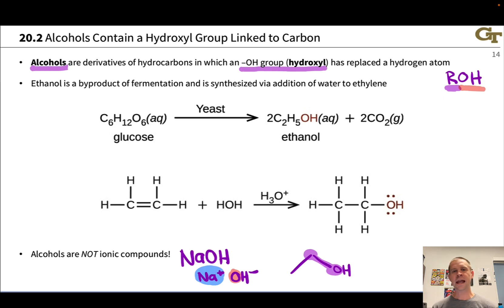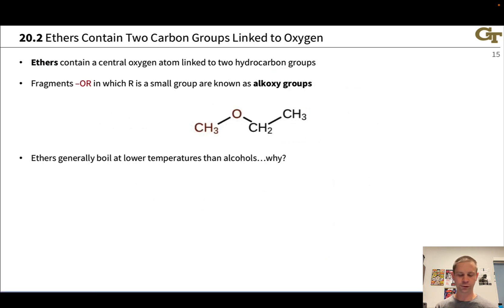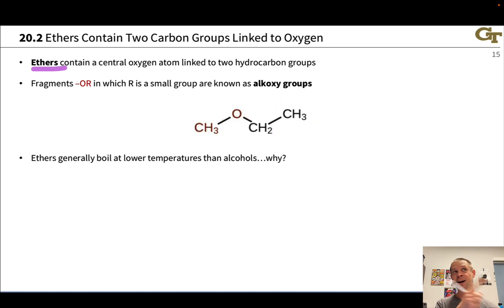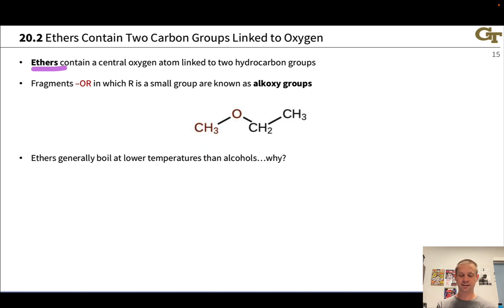If we take an alcohol and replace the hydrogen in the OH group with some other carbon group, we get a structure with two carbon groups connected to a central oxygen — and this is known as an ether. Essentially, we've taken ethanol, CH3CH2OH, and replaced the hydroxyl OH with a CH3. This creates an ether; specifically, this compound is ethyl-methyl ether.